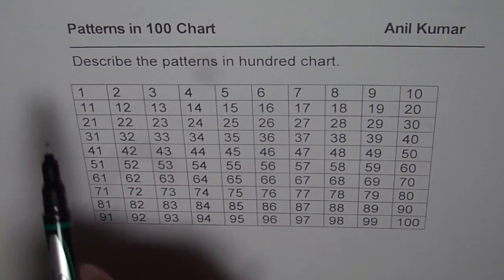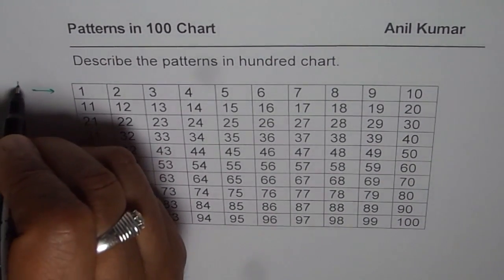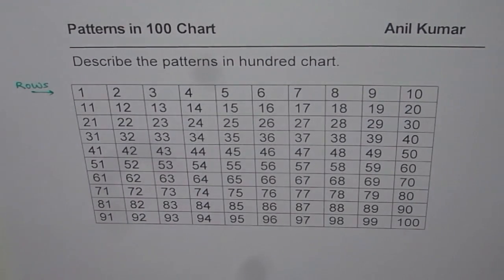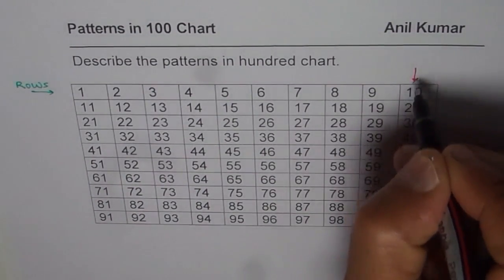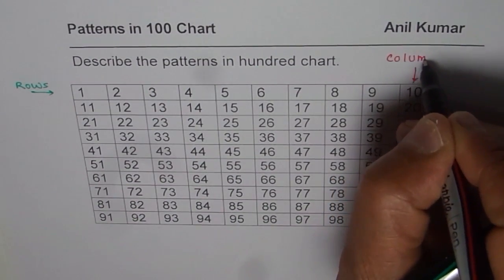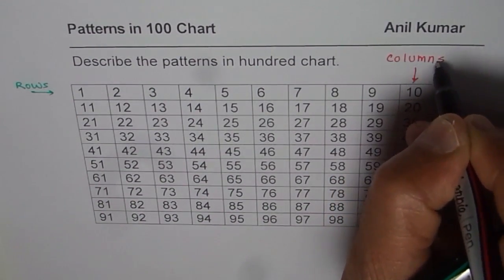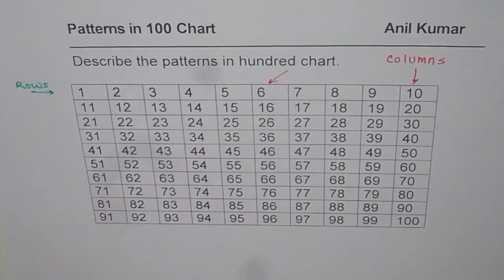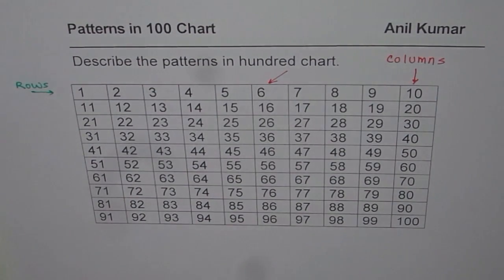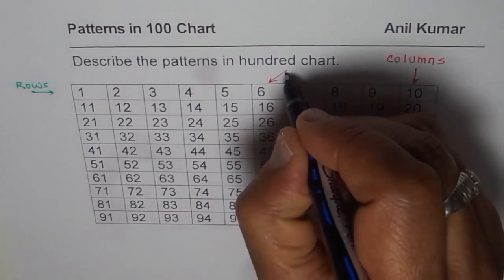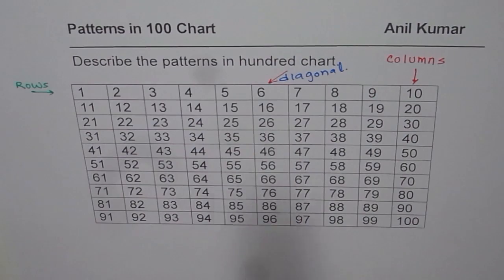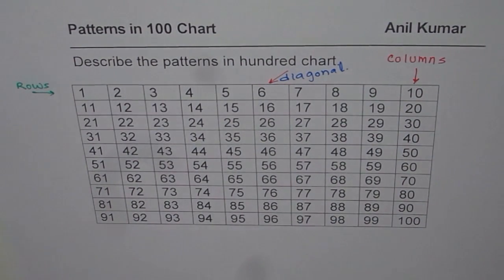We have all the numbers arranged in rows, which are horizontal, and columns, which are vertical. Anything arranged diagonally will be termed as a diagonal. You can use these terms — rows, columns, and diagonals — to describe the patterns which you see in this chart of 100 numbers.